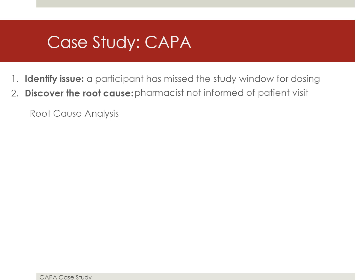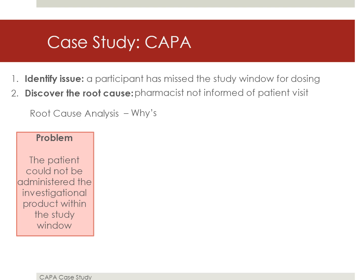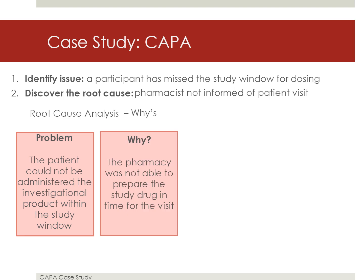There are many different ways to conduct a root cause analysis. In this case, the study team conducted a root cause analysis by asking a series of why questions until the root cause for the occurrence was discovered. The study team knows that the problem was that the patient could not be administered the investigational product within the protocol-specified study window. The team must ask why this happened. In this case, it happened because the pharmacy was not able to prepare the study drug in time for the visit.